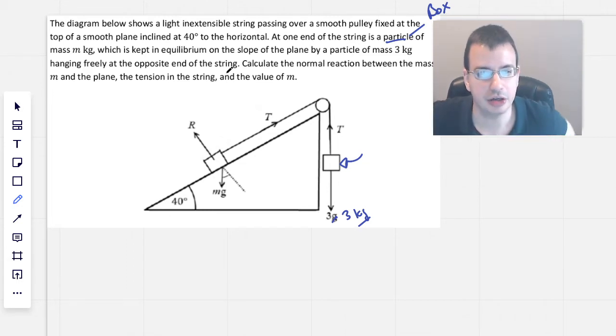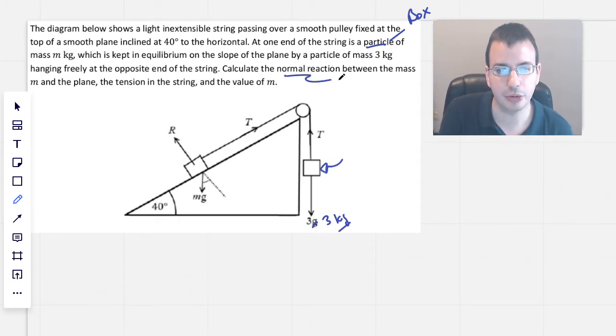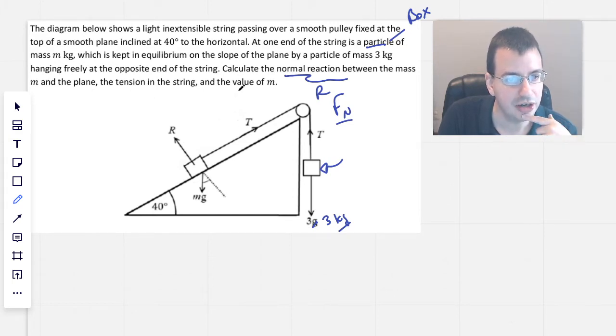Hanging freely at the opposite end of the string, calculate the normal reaction between the mass m and the plane, the tension. I'm going to call this instead of normal reaction, I'm going to call this the normal force, so I'm going to call it force n for force normal, but it's the same as r over here. The tension of the string, t right there, and the value m of this mystery block.